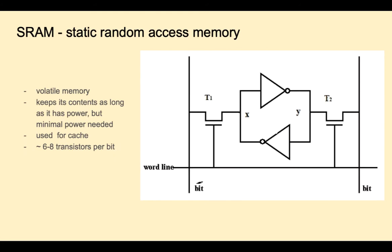SRAM, static random access memory, is used for cache. It's called static because it keeps its contents as long as it has power. SRAM requires about 6 to 8 transistors to store a single bit, which is one reason why it's more expensive. Here we see a diagram to store one bit.